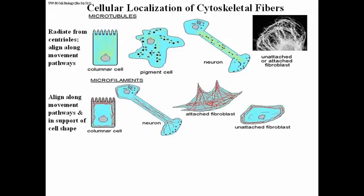Here are cells showing where the microfilaments are. In the columnar epithelial cell, the microfilaments are organized roughly around the cell in what's called the cell cortex — the cytoplasm immediately below the cell membrane. If this is a cell lining your small intestine, the structures at the top of the cell are microvilli, and the actin filaments are not only in the cortex of the cell as a whole, but also penetrate the microvilli.